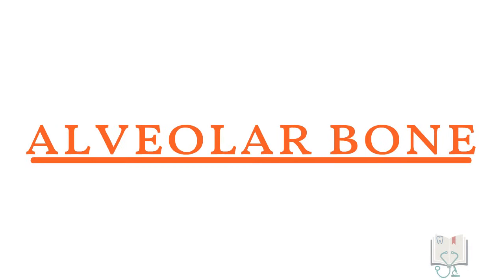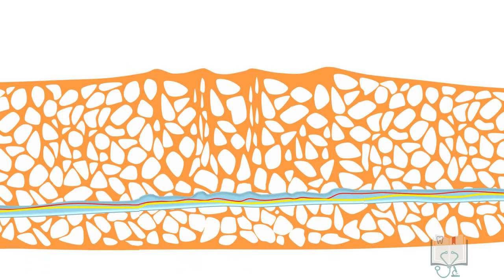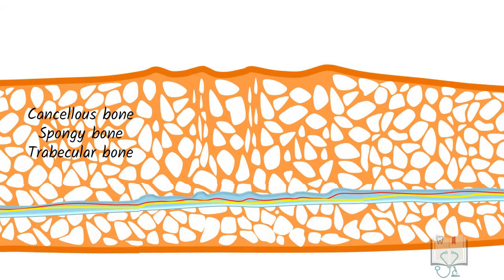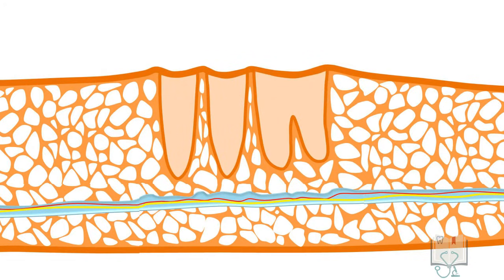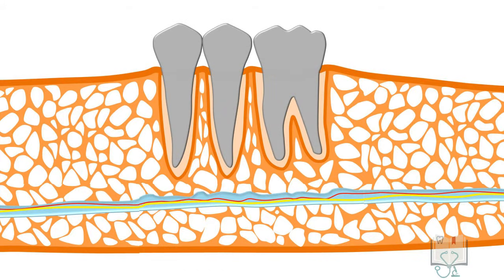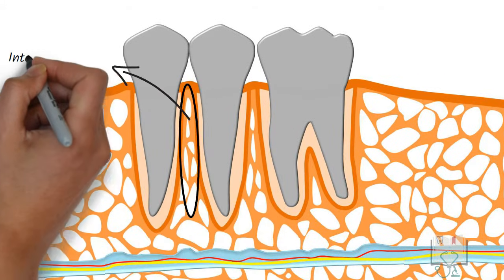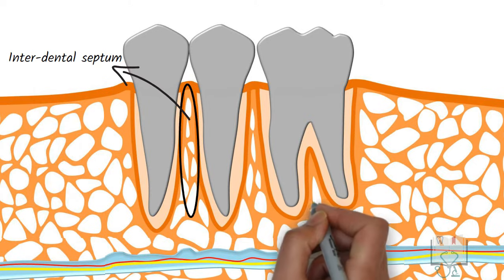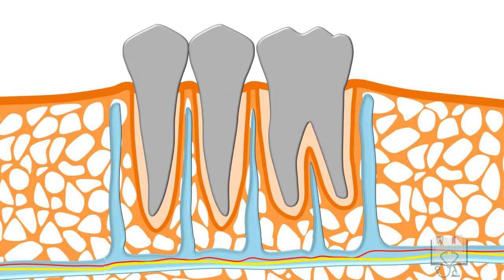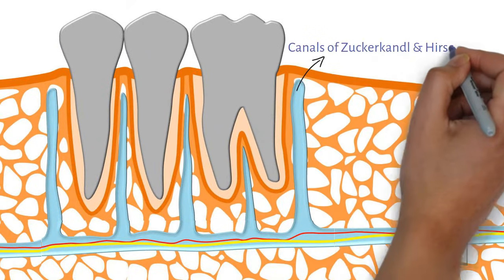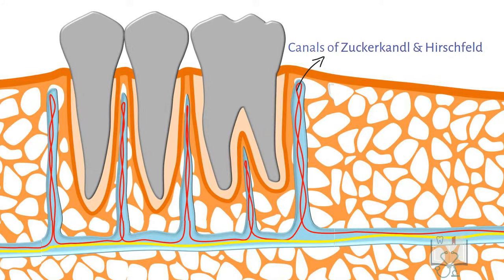Alveolar bone. Mandible and maxilla, like any other bone, are formed of cancellous bone — or spongy bone or trabecular bone — in the center, surrounded by a dense outer sheet of compact bone. What separates alveolar bone from other bones is the presence of tooth sockets, which are also formed of compact bone. These sockets provide anchorage to the roots of teeth. The portion of alveolar bone between two teeth is called the interdental septum, and the portion between roots of a multi-rooted tooth is called the interradicular septum. These septa contain the nutrient canals, or the canals of Zuckerkandl and Hirschfeld, which carry the blood vessels and nerves.